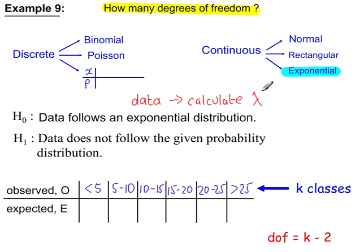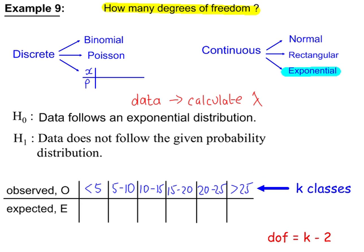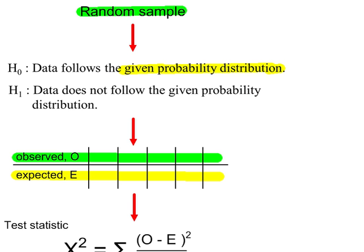Example 9: from the given data, we've calculated the parameter lambda. So in H0, we're just testing whether the data follows an exponential distribution — there's no mention of the mean or the value of lambda. This gives k minus 2 degrees of freedom, so 4 degrees of freedom for this table.